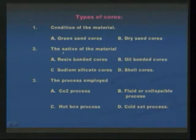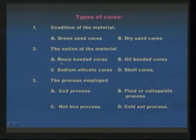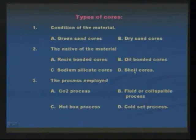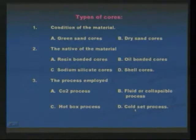Next, depending upon the nature of the material — for production of good quality cores, we must add some bonding materials, such as resin bonded cores, oil bonded cores, sodium silicate cores, and shell cores. Thirdly, the processes employed for manufacturing of cores are: CO2 process, fluid or collapsible process, hot box process, and cold set process.